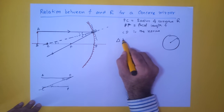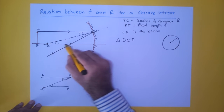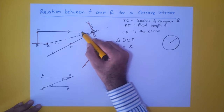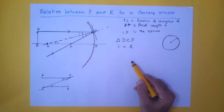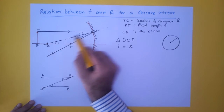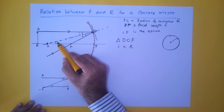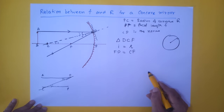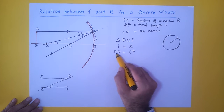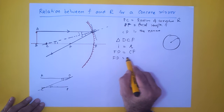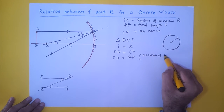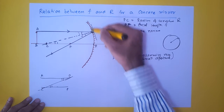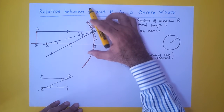Now focusing on triangle DCF: I have angle I and angle R in this triangle. Since angle of incidence equals angle of reflection (I = R), these two angles are equal. Therefore the sides opposite to them are also equal — the side opposite to I is FD, and the side opposite to R is CF, so FD = CF.